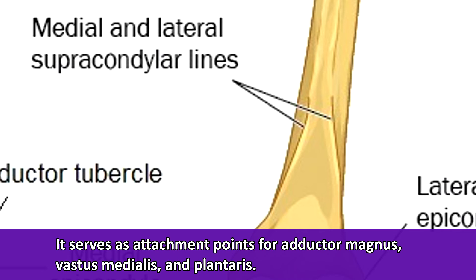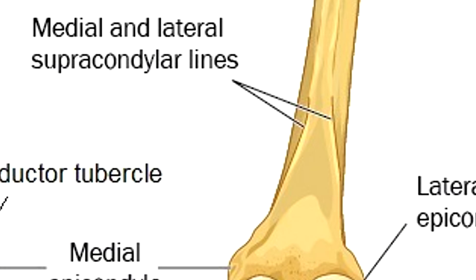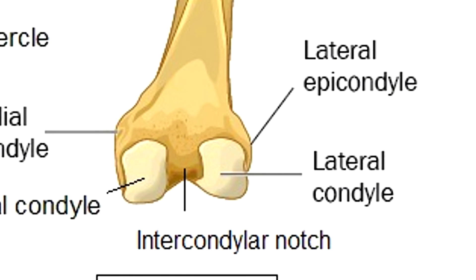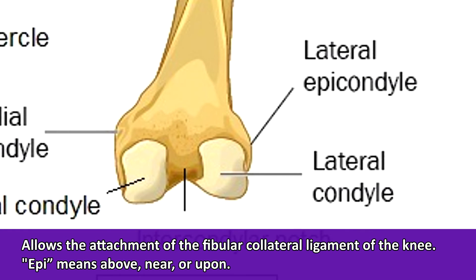Medial means toward the midline of the body, and lateral means away from the midline of the body, which will help you keep straight which is the medial and which is the lateral supracondylar line. The lateral supracondylar line extends down toward the lateral epicondyle, which allows for the attachment of the fibular collateral ligament of the knee. The prefix epi means this structure is above, near, or upon that lateral condyle.